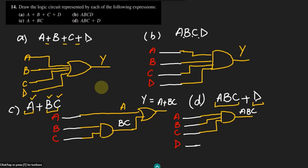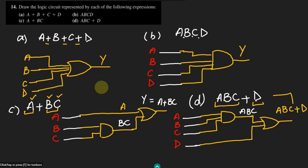After the AND gate, we have an OR circuit. To this OR circuit, ABC and D are given as inputs, and the output is ABC plus D, which corresponds to the expression. That is the solution of question number 14. By solving different parts, we can easily represent expressions using logic circuits. That's it for today — I'll see you in the next video, take care of yourself.